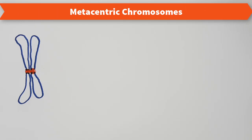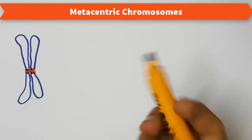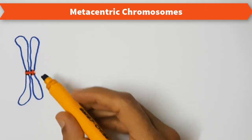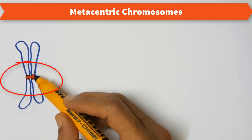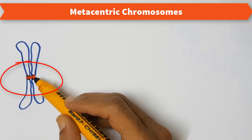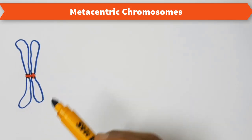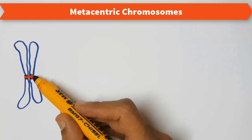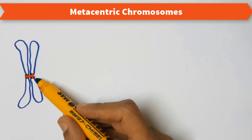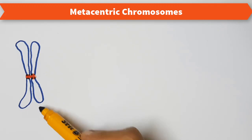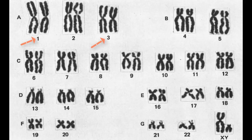Metacentric chromosomes. In metacentric chromosomes, the centromere is located exactly at the center of the chromosome. These chromosomes will have two arms that are of equal length. Chromosomes number 1 and 3 in humans are metacentric chromosomes.